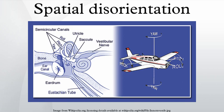Spatial disorientation, or spatial unawareness, is the inability of a person to correctly determine his or her body position in space. This phenomenon refers especially to aircraft pilots and underwater divers, but can also be induced in normal conditions chemically or physically.